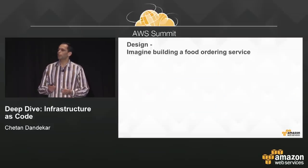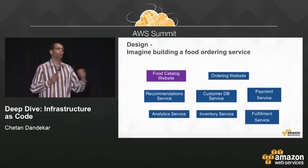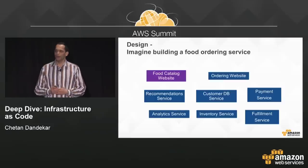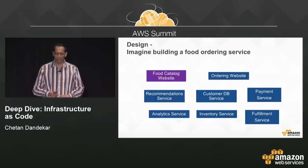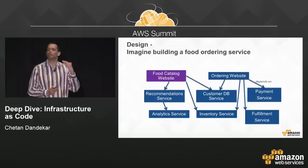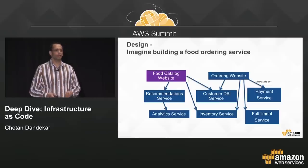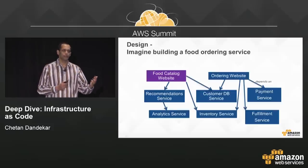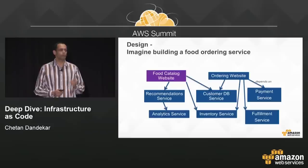As an example, imagine you're in the food delivery business. You'll have a bunch of services — a food catalog, a billing service, a payment service, a customer database, and so on. Whether you call it service-oriented architecture or microservices, you'll have a lot of services with interactions and dependencies among them. When modeling this in CloudFormation, each service or independent unit of operation can be modeled as a stack, depending on complexity. We're going to dive deep into the food catalog website as our example.